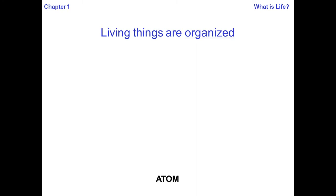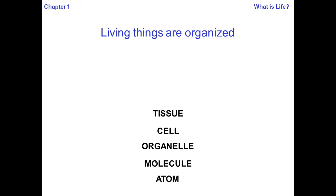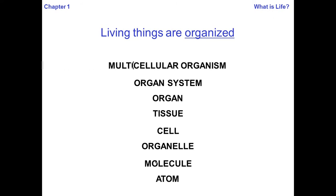Starting from the very smallest level of organization, we have the atom. Atoms combine to make molecules. Molecules combine to make organelles. Organelles combine to make a cell — so an organelle is smaller than a cell. Cells combine to make tissue: skin tissue, muscle tissue, connective tissue. When you combine these tissues together, you can make an organ, like your brain, heart, liver, or eye. When you combine organs together, you get an organ system, like the digestive system, the nervous system, or the musculoskeletal system. Combine several organ systems together and you get a multicellular organism, like a tree, a human, or a raccoon.